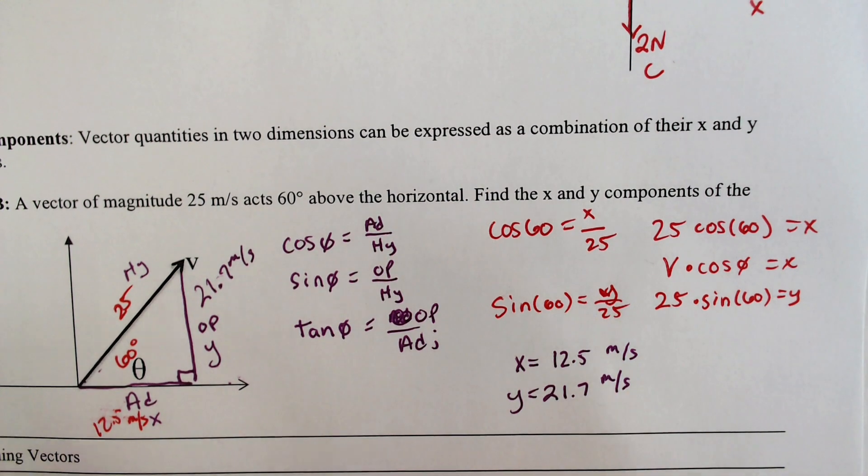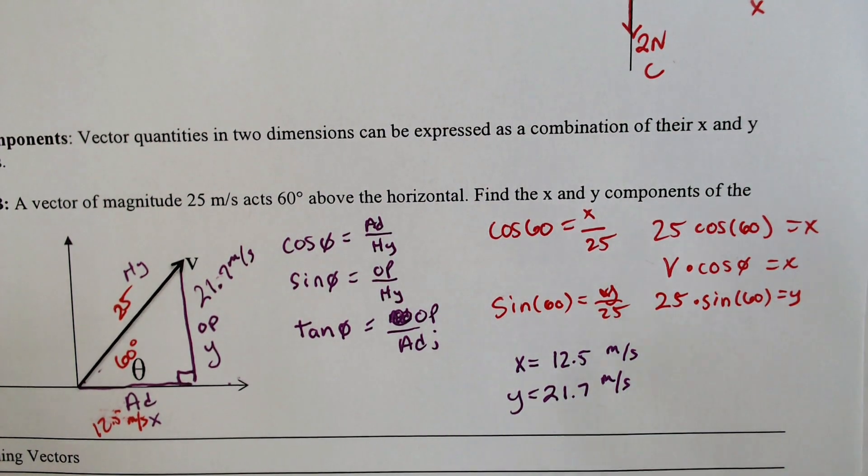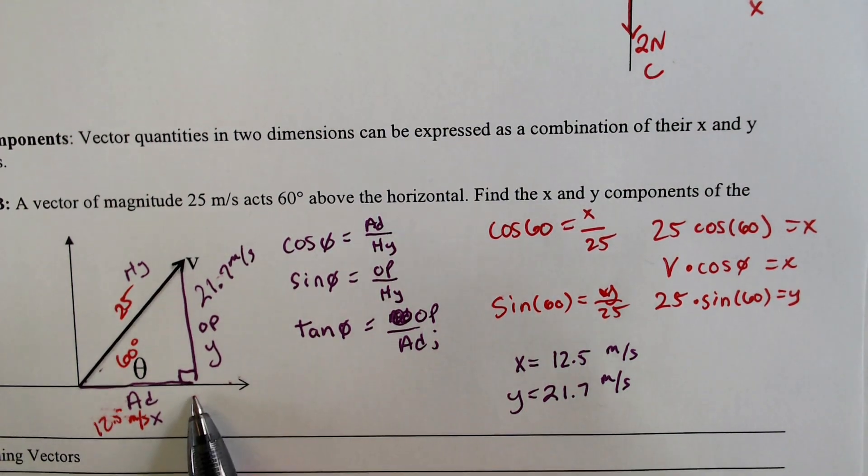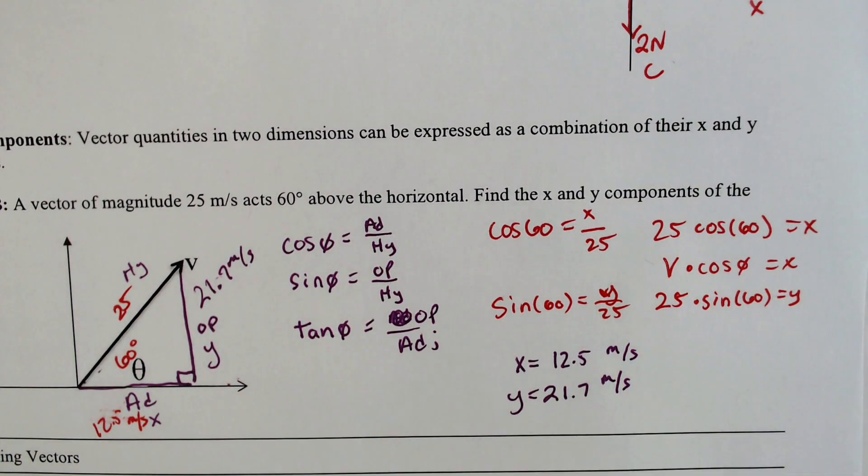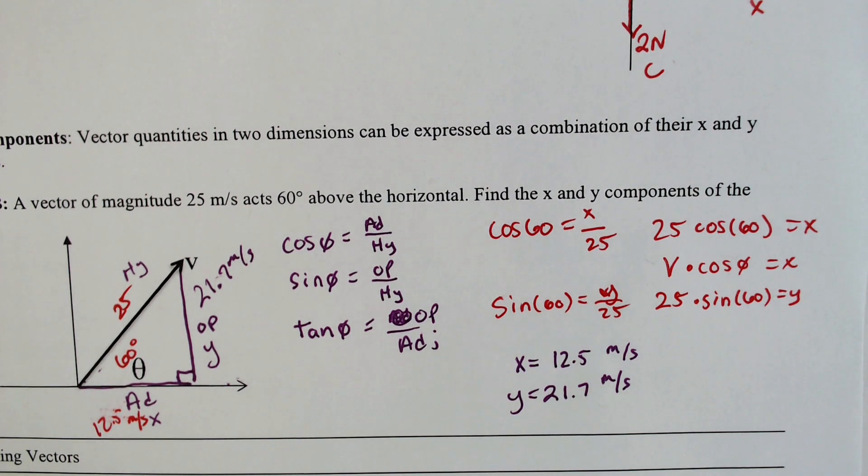So although we are really going 25 meters per second this way, the x component of that would be we are going to the right by 12.5 meters per second, and we are going up by 21.5 meters per second. So you can separate them into their components to help yourself out for following and solving some problems.